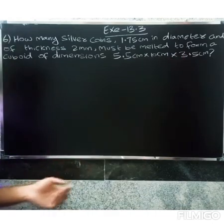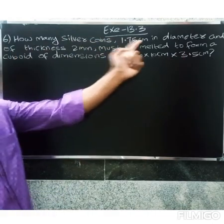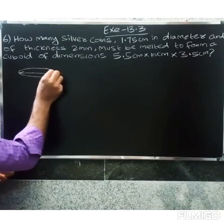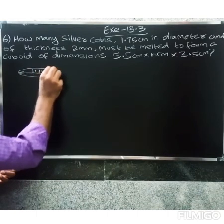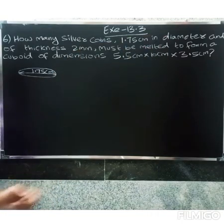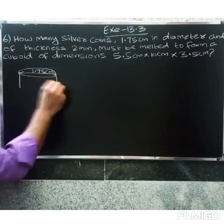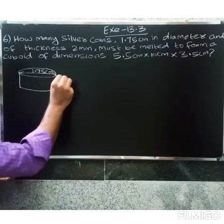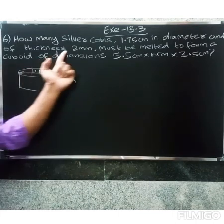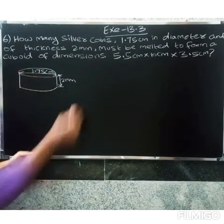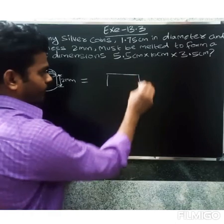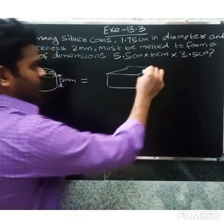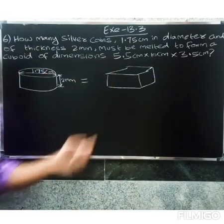So silver coins are 1.75 centimeter in diameter and of thickness 2 millimeter. These must be melted to form a cuboid of dimensions 5.5 centimeter, next length 10 centimeter, and width 3.5 centimeter.